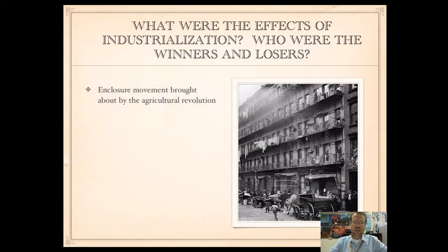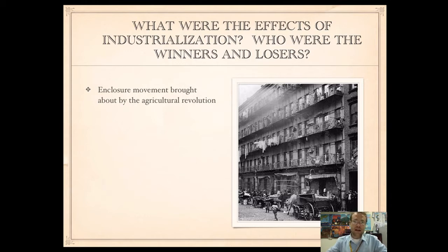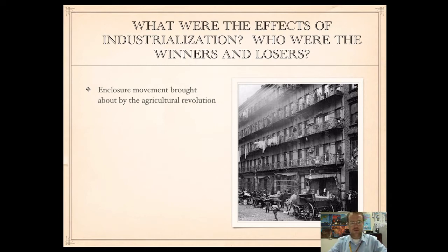What were the effects of industrialization? First, the enclosure movement was brought about by the Agricultural Revolution, and there are pros and cons to that. The pros are increased production of food and the ability to support a larger population. But negatives include people losing the ability to farm, having to move into cities, and a shift in what people could do for jobs.